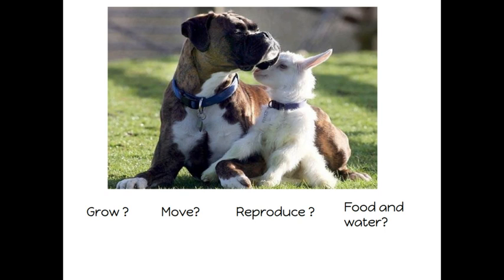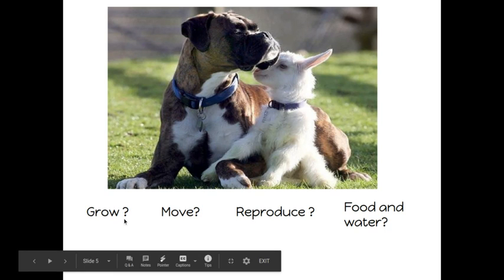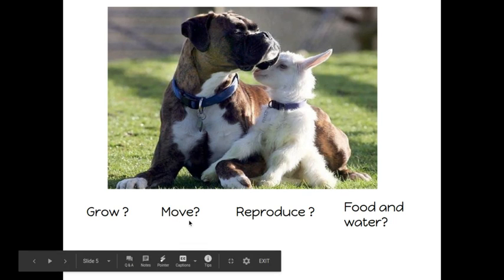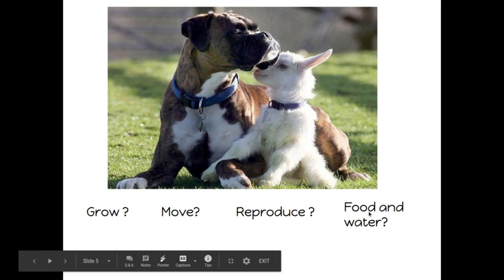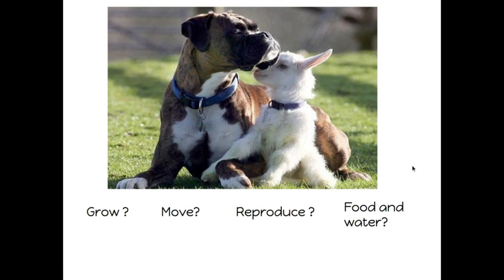We have two animals. Do they grow? Yes, they do. Do they move? Yes, they both move. Do they have babies? They both eventually will probably have babies. Do they need food and water to survive? Yes, they do. So these would be considered living things.